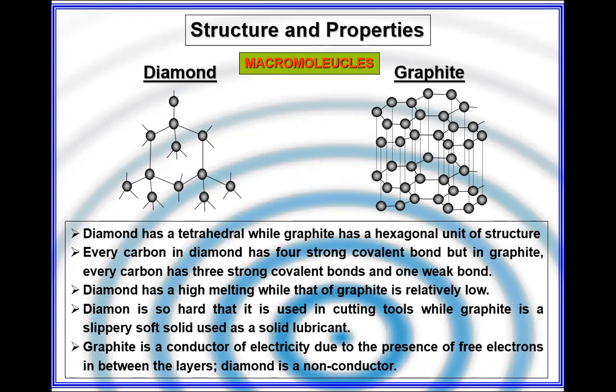These are the differences between macro and micromolecules. We have discussed macromolecules properties and the concept of allotropy. Inshallah, in the next class we will discuss ionic bonding, covalent bonding, and metallic bonding.